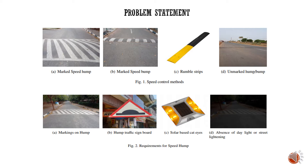Figure 2a shows the markings on the hump. If these are not present, it is called an unmarked hump or bump. Figure 2b shows the traffic sign which needs to be present 40 meters ahead of the hump, and figure 2c shows the solar-based cat eyes, which make the hump visible during night time. In the absence of street lighting, without solar cat eyes or a traffic sign board, it will cause severe discomfort for riders. This is a major cause of accidents during night time at speed humps.